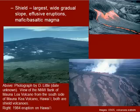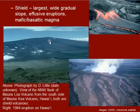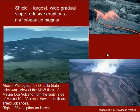Shield volcanoes are the largest of all the features that we see. These usually have wide, gradual slopes and are very large-scale features. Things like the Hawaii volcano have this low slope. These tend to have more effusive eruptions — this means calmer; the magma oozes out onto the surface as lava, with very little explosive activity.